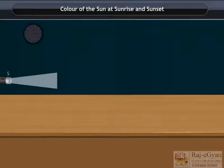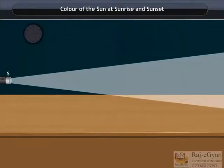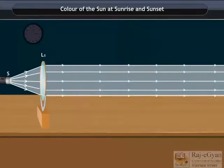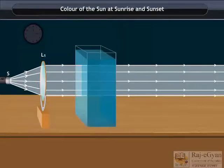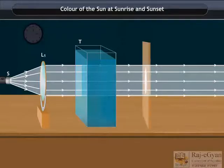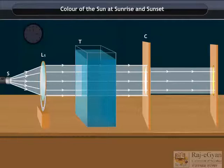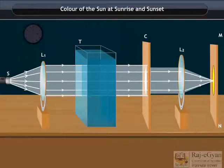Place a strong source S of white light at the focus of a converging lens L1. This lens provides a parallel beam of light. Allow the beam of light to pass through a transparent glass tank T containing clear water. Allow the beam of light to pass through a circular hole C made in a cardboard. Obtain a sharp image of the circular hole on a screen MN using a second converging lens L2 as shown here.